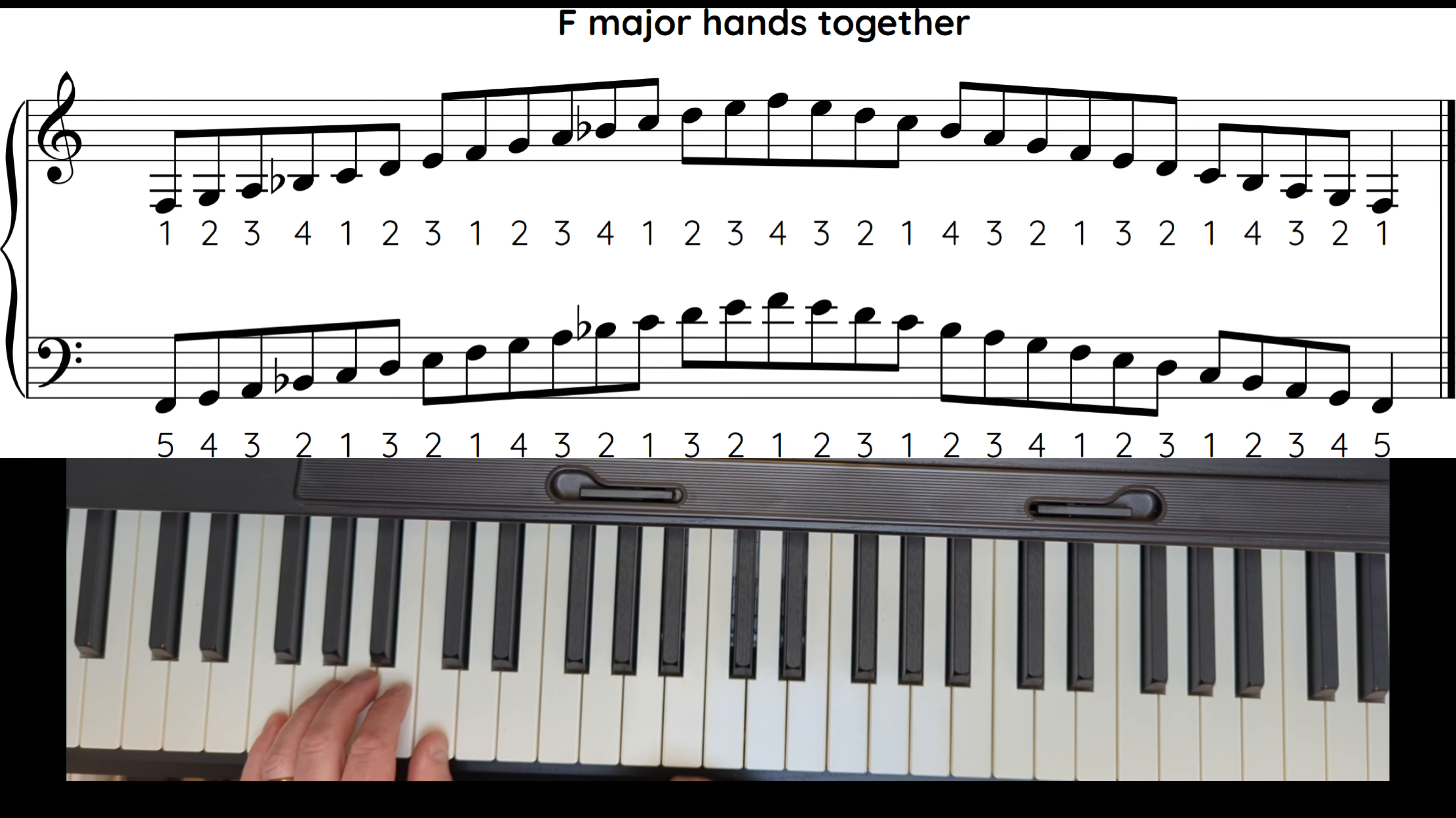Left hand: 5, 4, 3, 2, 1, don't forget the B flat. 3 over the top, this is the same fingering as G major. Get ready with your thumb and finger 2 on a B flat. Thumb, here's your thumb again, finger 2 on a B flat.